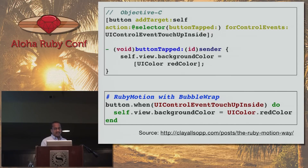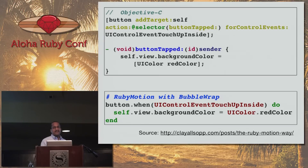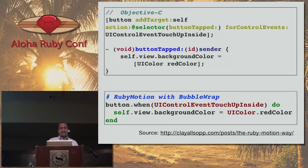Is less typing a good reason to use RubyMotion instead of Objective-C? I'm not sure that's true — we're all using IDEs with code completion anyway, so we're not really typing anyway. I think a good reason to look at RubyMotion is if you have a background in Ruby and you want to build iOS apps.